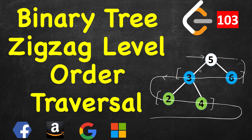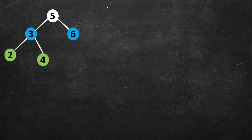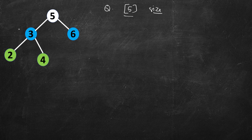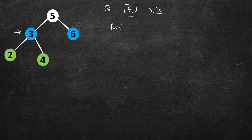I'll give a brief recap of level order traversal — if you already know it, this will be a quick revision. In simple level order traversal, we keep a queue and push the first node into it, so 5 is pushed. We then check how many nodes are at a given level, denoted by the size of the queue. We run a loop from i equal to 0 to size minus 1 and pop from the queue that many times.